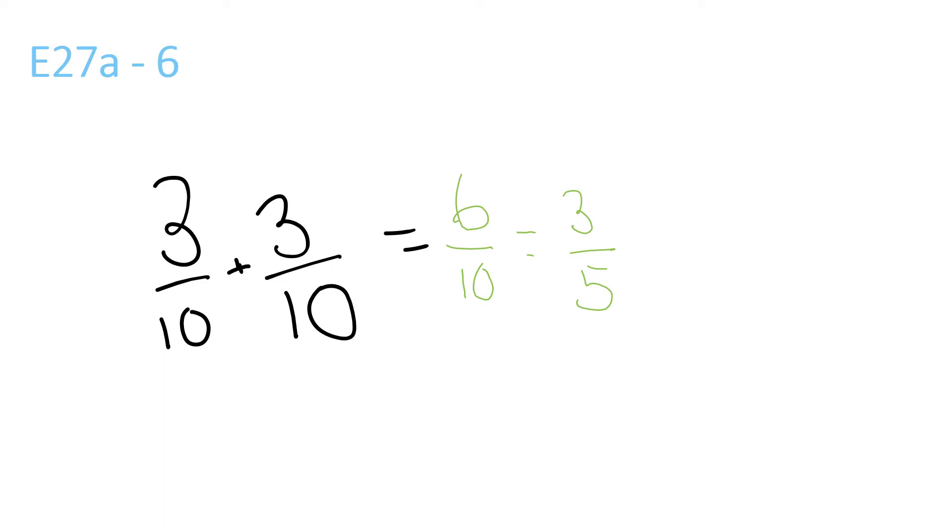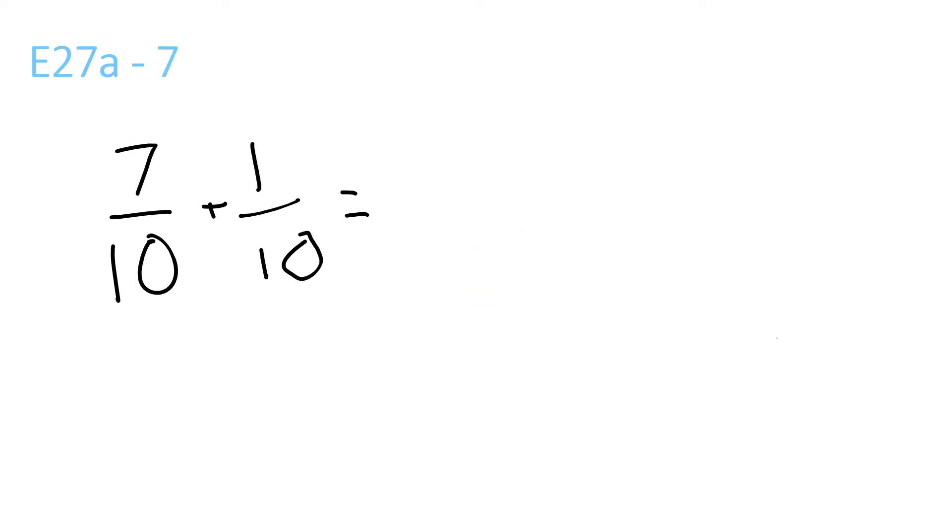Because 2 goes into 6 and 10—2 goes into 6 three times, that's why it's 3, and 2 goes into 10 five times, that's why it's 5. 7 plus 1 is 8 over 10, which equals 4 over 5.